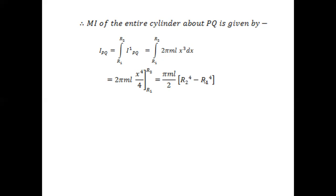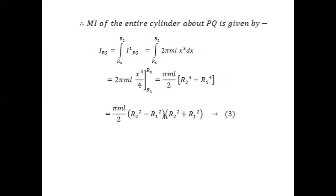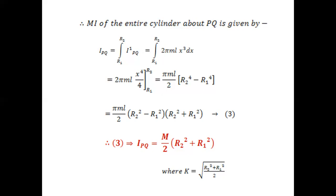We write R2⁴ − R1⁴ as (R2² − R1²)(R2² + R1²). From equation 1, πmL(R2² − R1²) equals the total mass M. Replacing that factor by M, we get the moment of inertia of the hollow cylinder about its axis: I_PQ = M/2 · (R2² + R1²). The radius of gyration is k = √((R2² + R1²)/2). This is the moment of inertia of a hollow cylinder about its own axis.